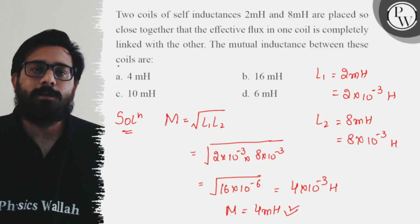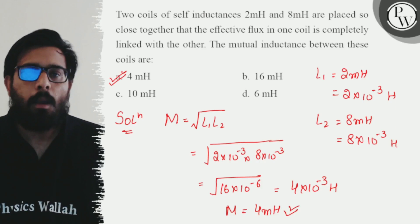Here the option number A is absolutely perfect. Option A is 4 millihenry.